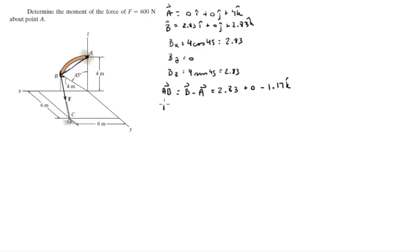Then we need the Cartesian vector form of F. We only have the magnitude of F, which is 600 newtons. And we know that F goes from B to C. So let's find the location of C. So C sits at 6 in the I plus 6 in the J plus 0 in the K. So we need to find vector BC in order to find the Cartesian vector form of F.